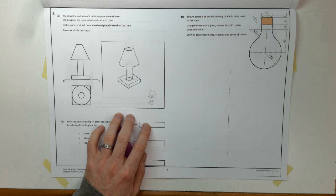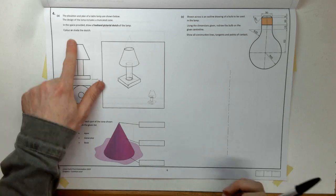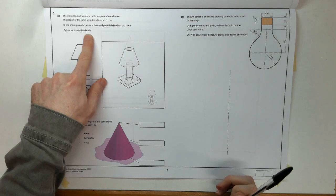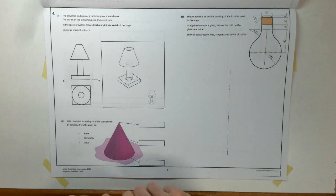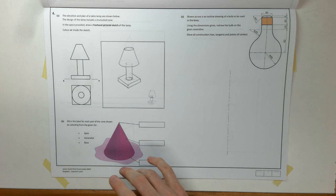So that is my freehand pictorial sketch. And what we're going to do now is colour or shade. Don't forget to do that. So we can do a pencil render of that. I'm going to pause the video while I do that.